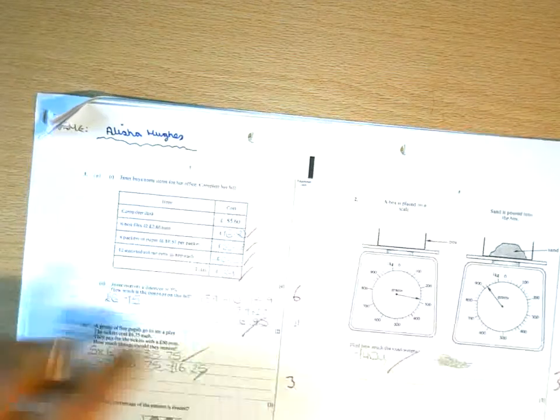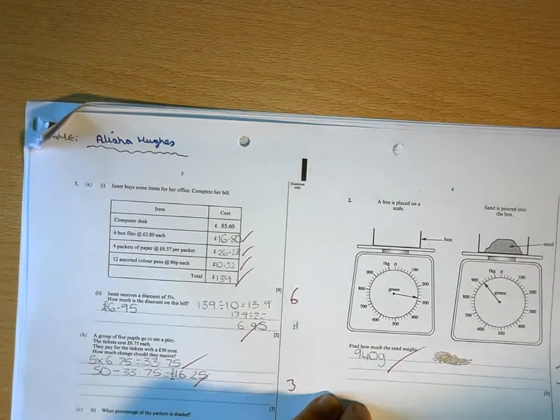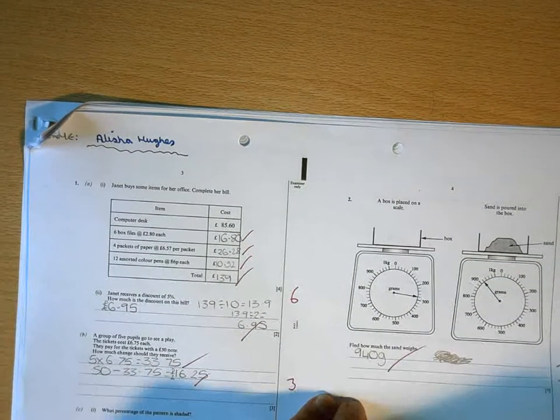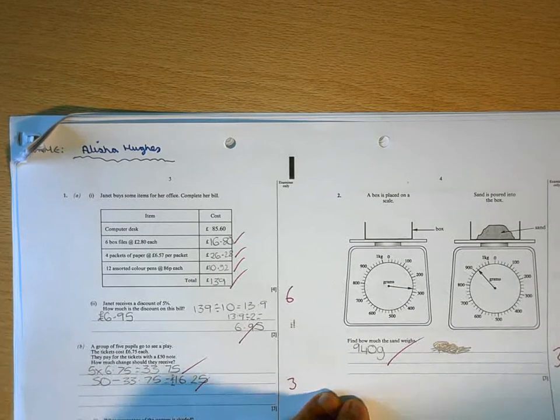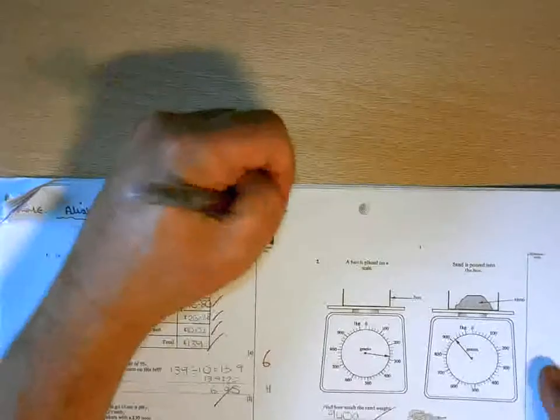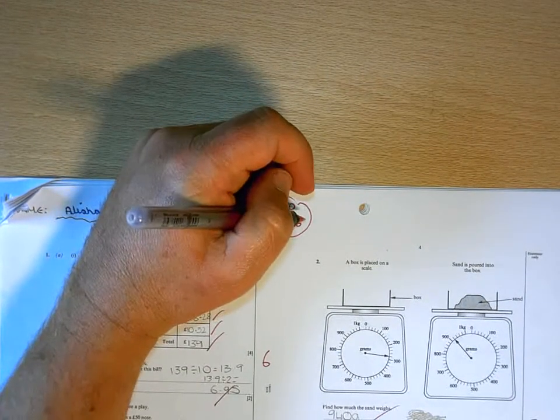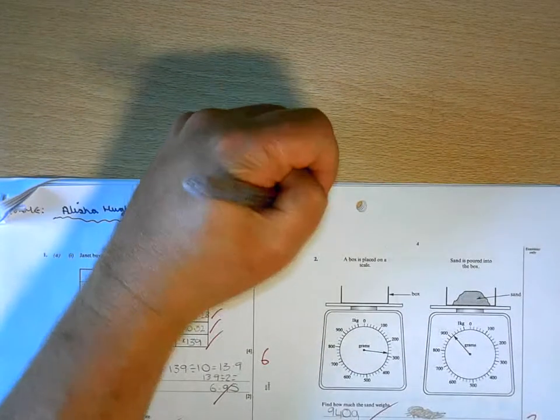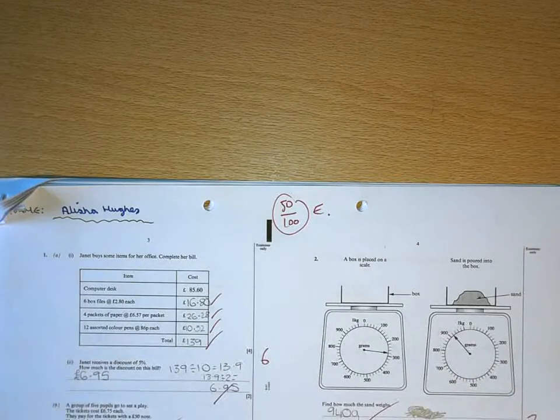So overall then, Alisha, you have scored 14, 17, 22, 27, 40, 46, 49, 50. So that's going to be 50 out of 100, which is a grade E. You're 5 marks off of grade D with what you've done there.